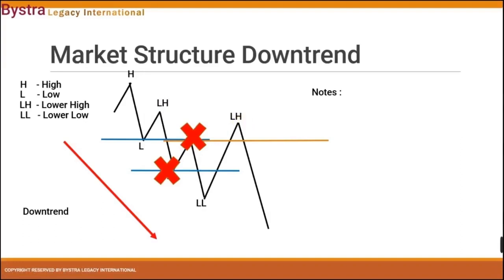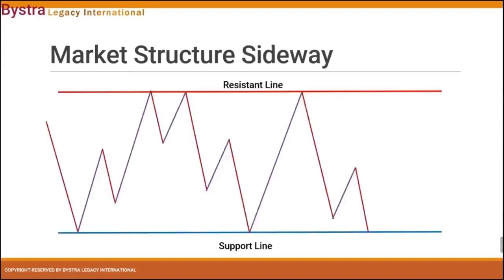Now let's move on to the next market structure — sideways. From here you can see, price will only move in a zigzag motion, where there is a resistance line and a support line. So price will move towards the support line, go up to the resistance line, come back down to the support line, and go back up towards the resistance line. So it only moves between this zone.